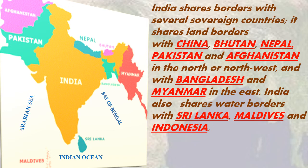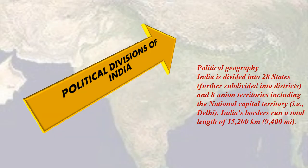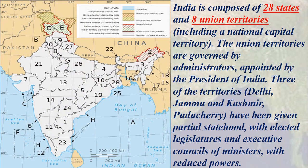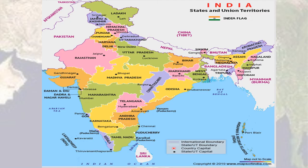Today, India provides a link between the east and west. Its central position between the two worlds has helped the development of its own industries and trade. India's largest states in terms of area are Rajasthan, Madhya Pradesh, and Maharashtra, and in terms of population are Uttar Pradesh, Maharashtra, and Bihar.